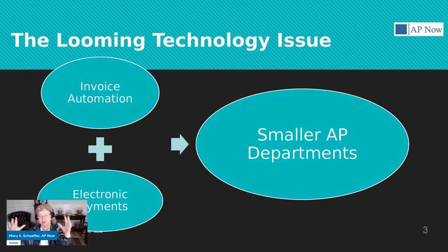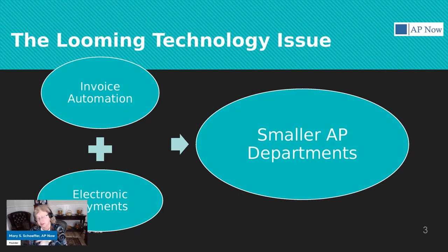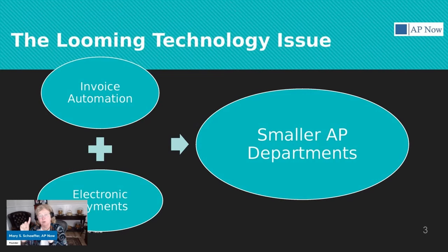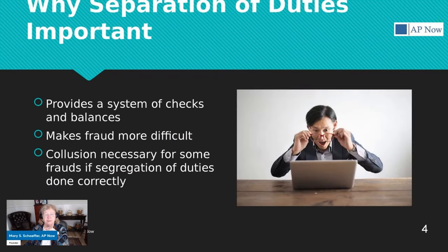We've got accounts payable automation solutions being used by a growing number of companies, and we're starting to make more and more electronic payments — less paper checks and less of all the manual work that goes into handling those paper checks and data entry. So what this means is we have smaller and smaller accounts payable departments, and what was once just a small company issue is now an issue being faced by a growing number of companies. Appropriate separation of duties is becoming something that more companies have to address.